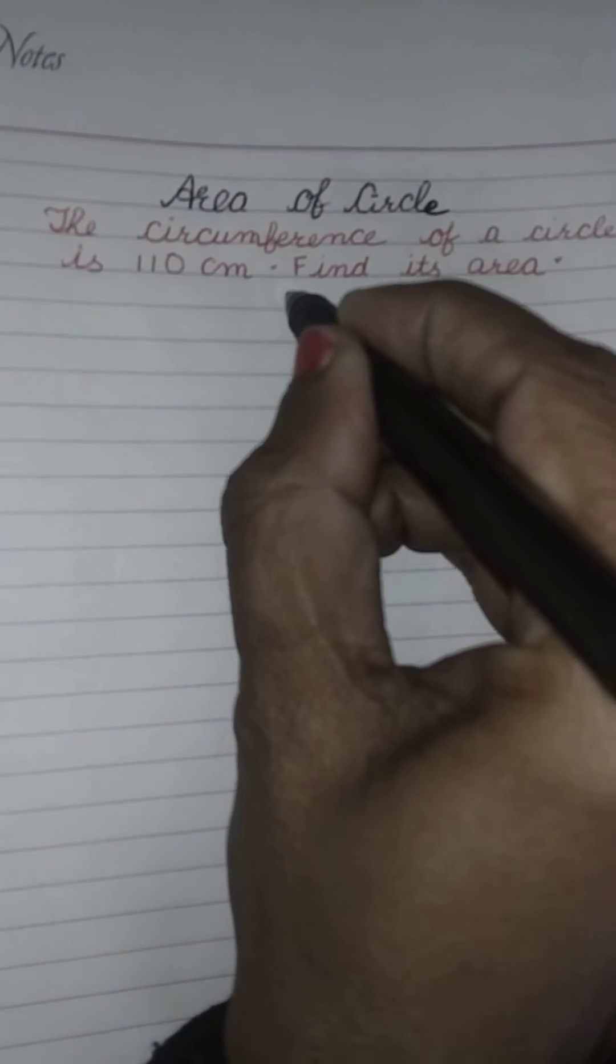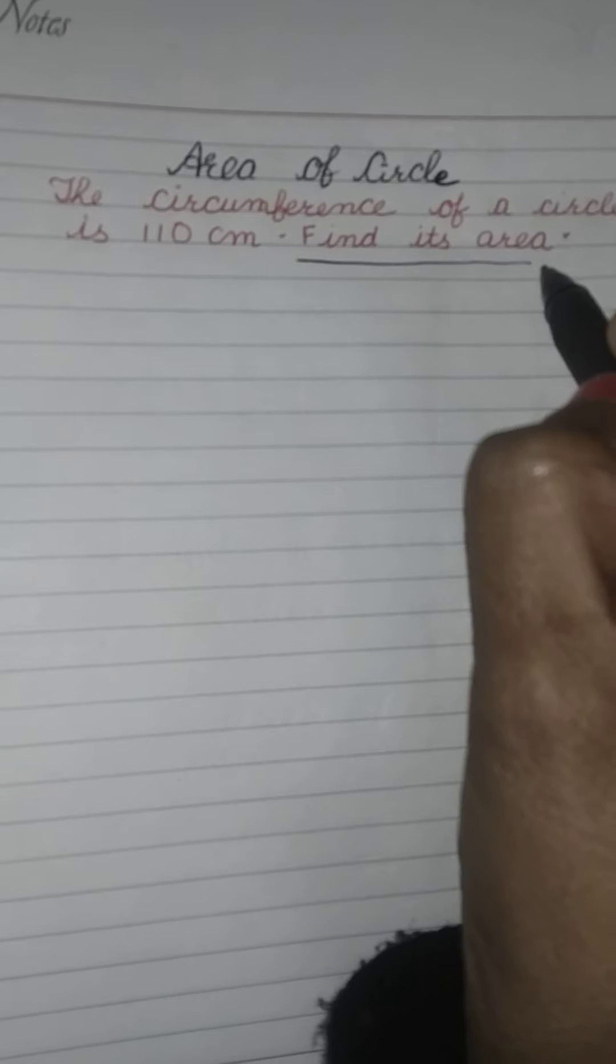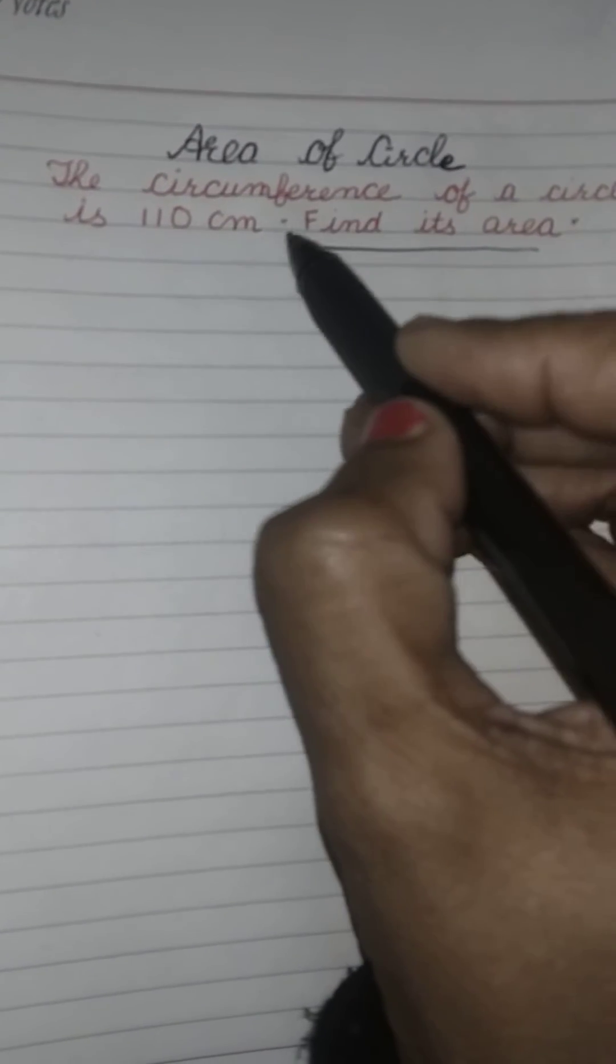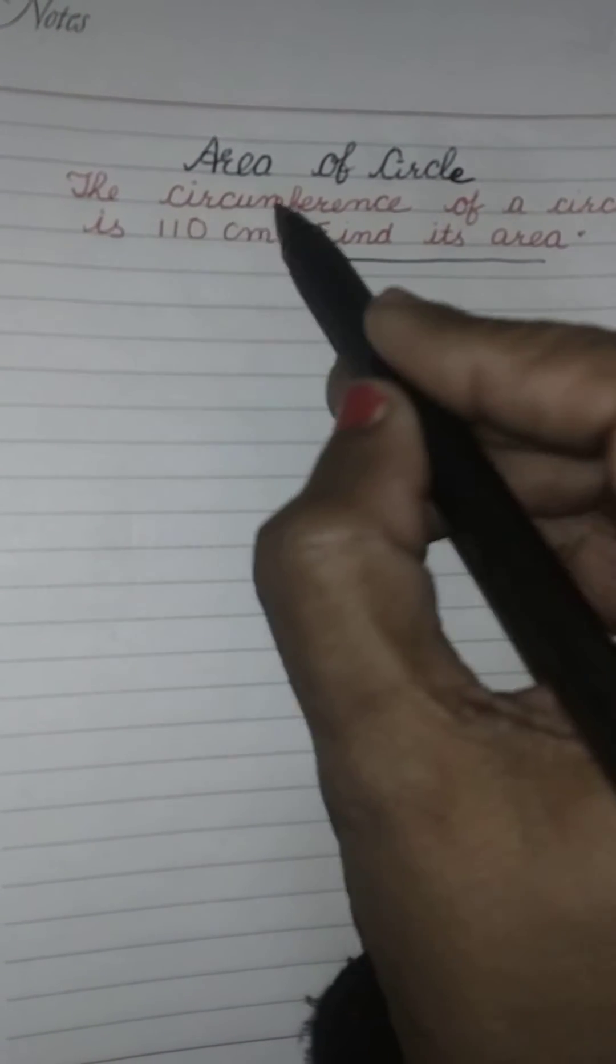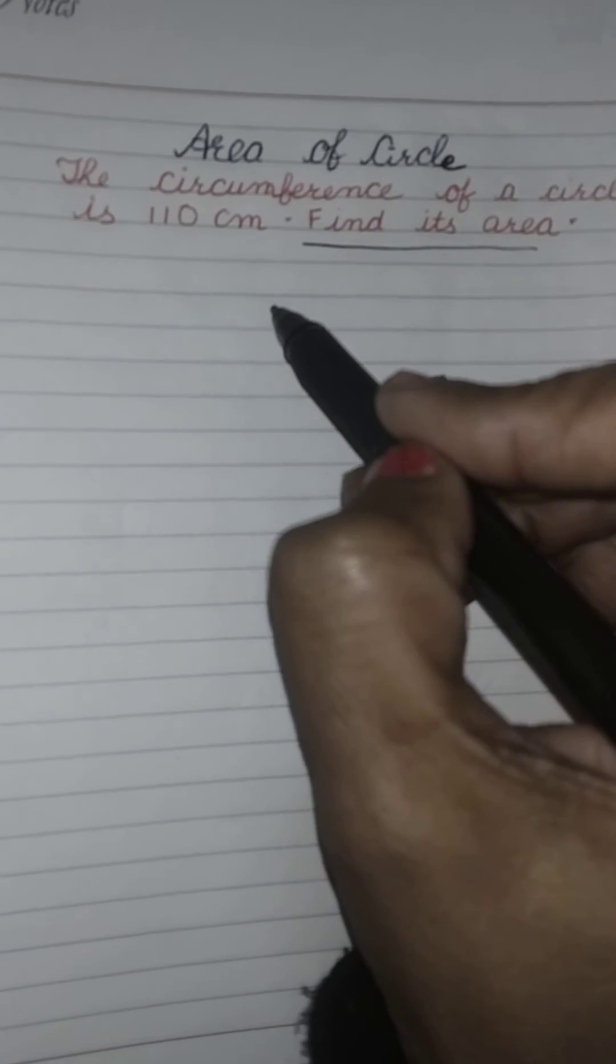We have to find out the area. For the area of the circle, we have the formula πr². For that, we need the radius. But we don't have the radius here, we have the circumference. So we will find out the radius first from the circumference.